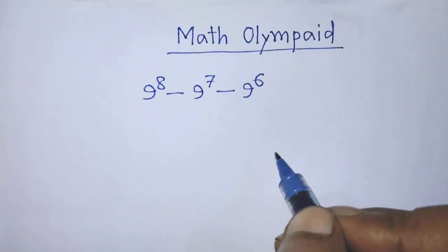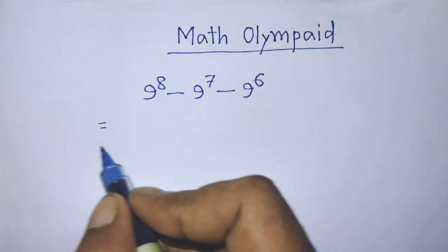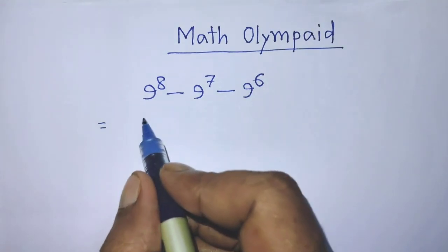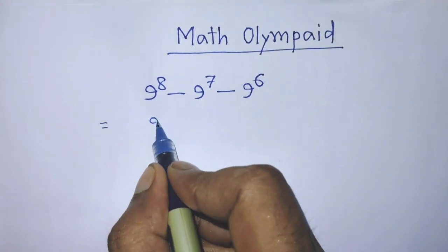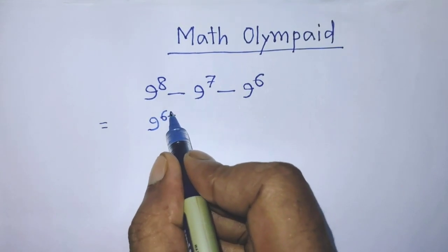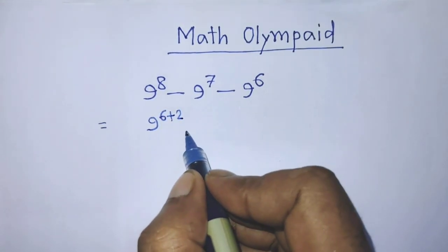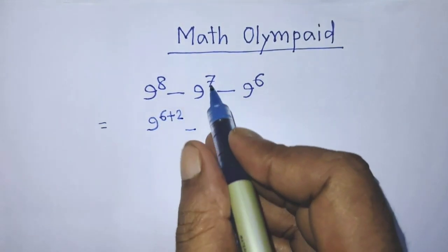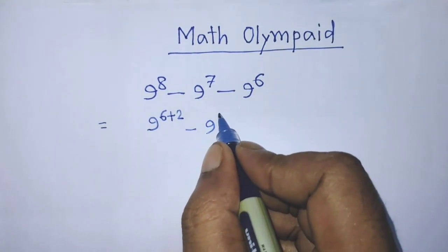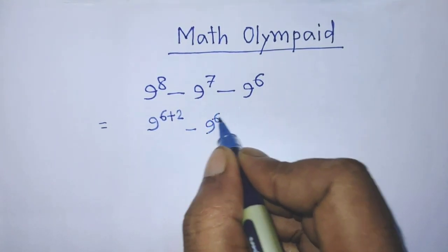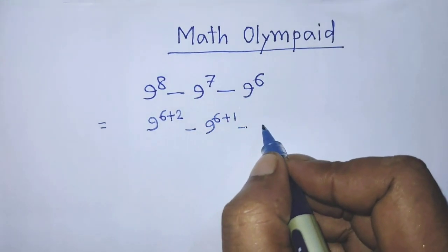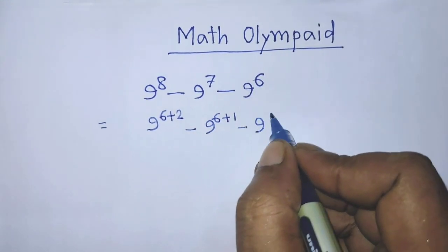In the first step of the solution, we rewrite the terms: 9 to the power 6 plus 2, minus 9 to the power 6 plus 1, minus 9 to the power 6.